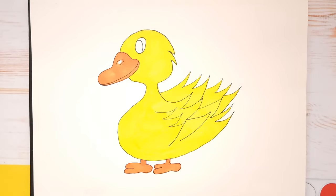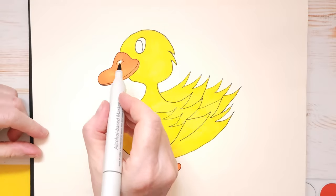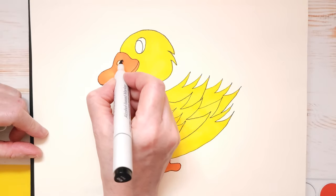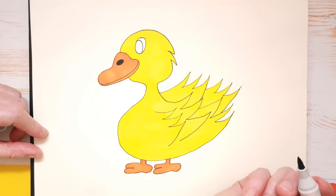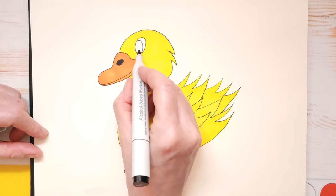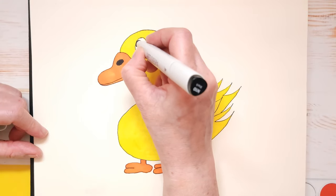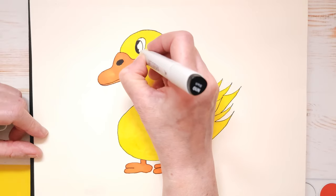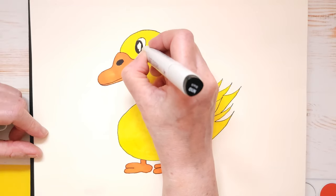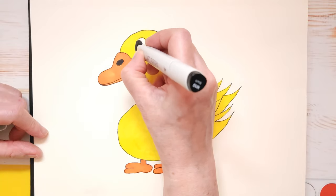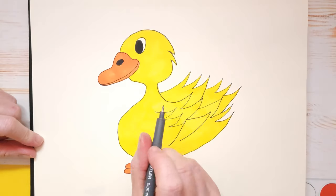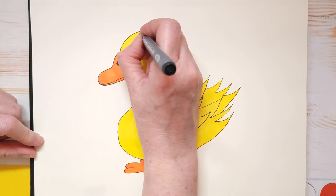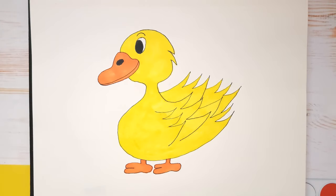And I'm going to fill in his nostril with black. Just like that. And his pupil is going to be black as well. So let's fill in his pupil with black. There we go. He's got a big eye there. I'm going to take my fine liner. You can use any black marker you want, but I like the fine-tipped marker. I'm just going to give him an eyebrow. There we go. And that's our little baby goose.